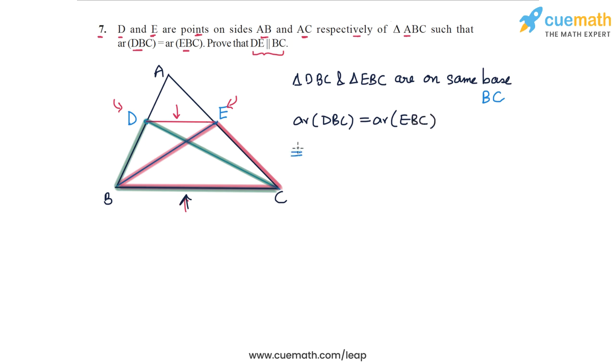So these two triangles are on the same base, they have the same area, and this means that they must lie between the same parallels. So triangle DBC and triangle EBC must lie between the same parallels.